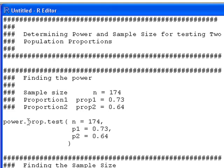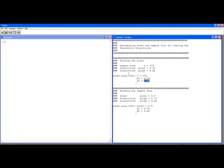You use the power.prop.test. Here you put in n which is 174, same as above. p1 is the same as above as proportion 1, that's 0.73. p2 is 0.64. And if we run this, we'll see what the output looks like.